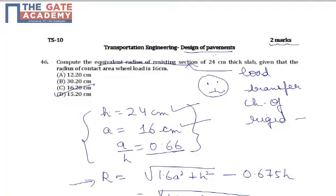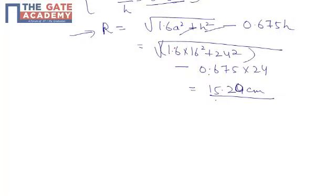From this, r—that is the radius of resisting section—is given by the square root of 1.6a² plus h² minus 0.675h. Since a and h are known, simply by substitution of the values we get the value as 15.20 centimeters.